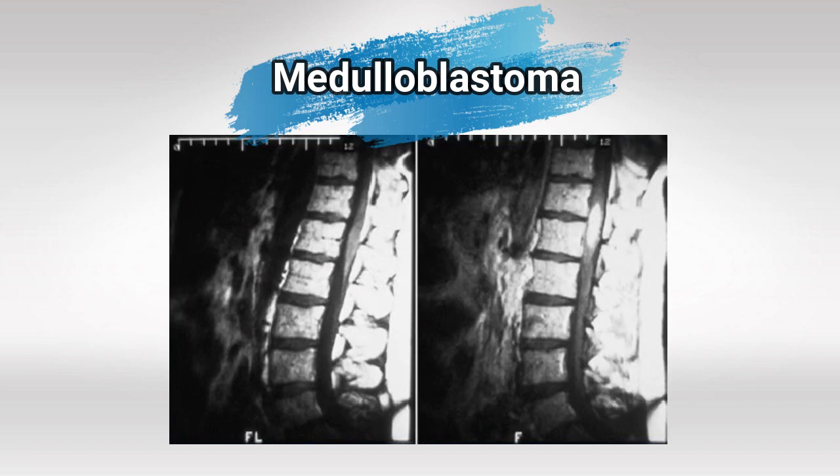Here's a picture showing drop metastasis to the spine. Basically the tumor starts in the brain and suddenly appears in the spinal cord — in the middle of the spinal cord — as if the tumor has dropped from the brain to the spinal cord. This is highly characteristic of medulloblastoma.